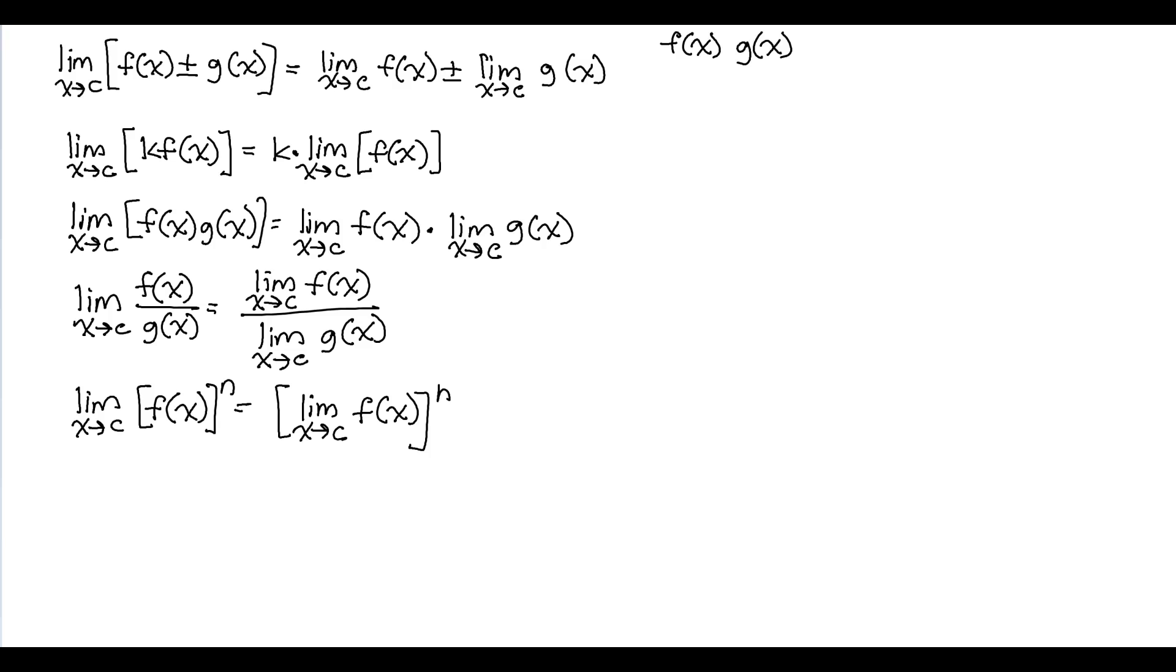Usually we can solve a limit by substituting a number into the function. So if we want to find the limit as x approaches 2 of x squared, we just substitute 2 in there because x approaches 2 and it actually exists at 2. So 2 squared equals 4. It's literally evaluating the function at 2 for limits. That's some of the easier limits.